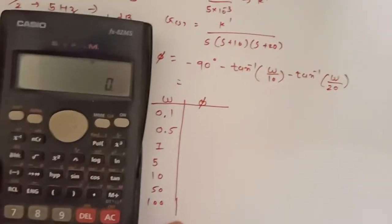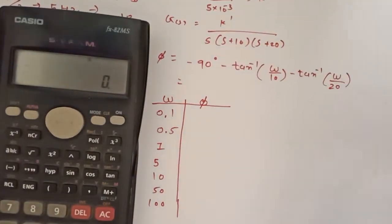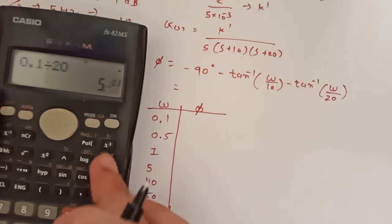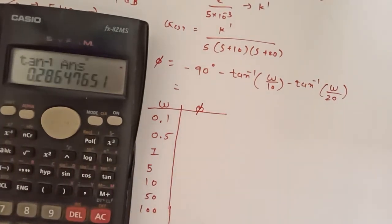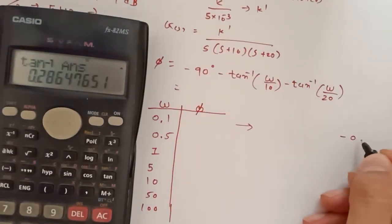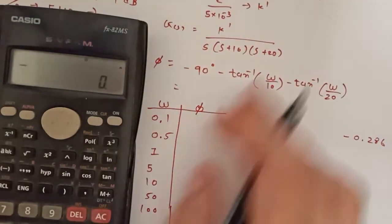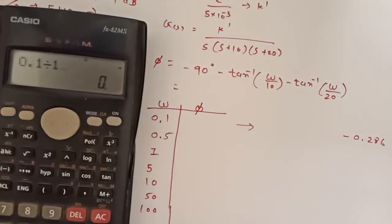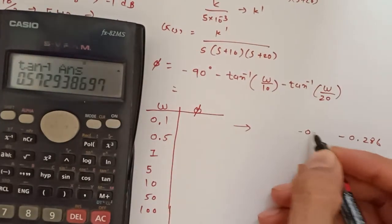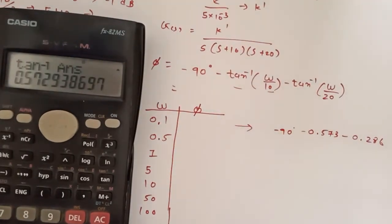Now I want to show you how to calculate. Minus 90, now for minus tan inverse omega divided by 20, that is omega is 0.1 divided by 20. It is minus tan inverse, answer I will get for this value I get 0.573. This for omega 0.1 divided by 10, the value is 0.573. And 90 is already in equation, so by adding this all I am able to get 90.86.